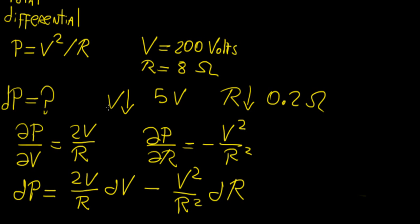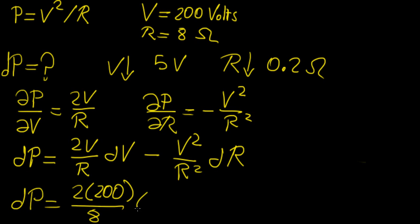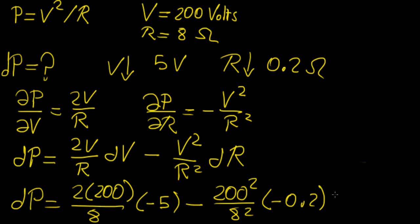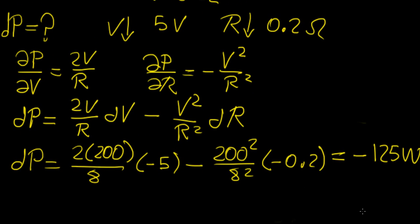And what are these two changes? Well, these are just the changes we just talked about. So dV is going to be negative 5 because we're decreasing, and dR is going to be negative 0.2 because that's decreasing as well. So if we put the values in — that's the original voltage 200, times 8, times negative 5, minus 200 squared over 8 squared, times negative 0.2 — that's going to give us negative 125 watts.